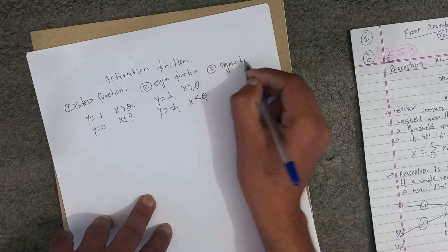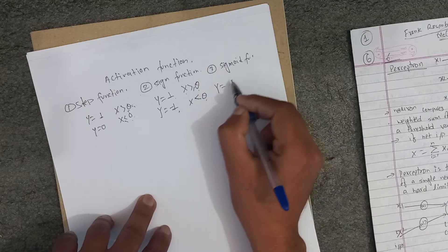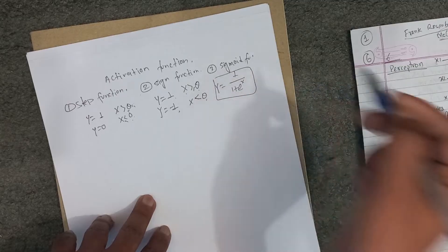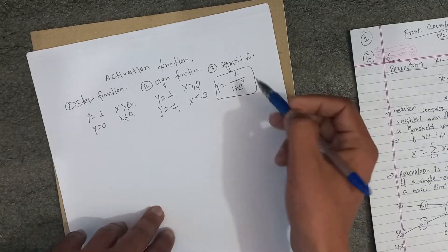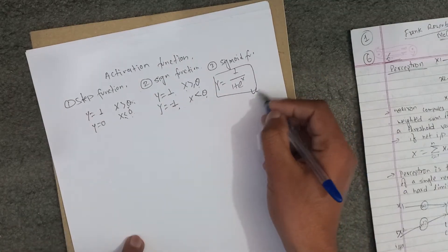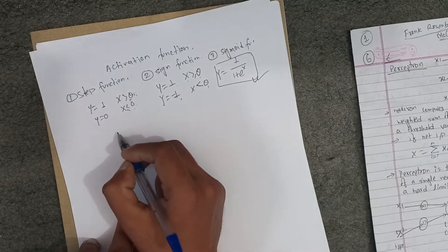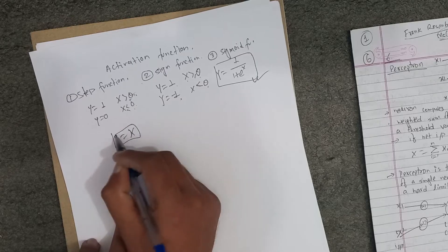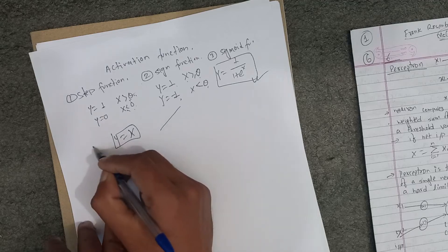The sigmoid activation function: the output y is calculated as 1 divided by (1 plus e to the power of negative x). This is used in back-propagation. Another activation function is the linear activation function: y equals x.